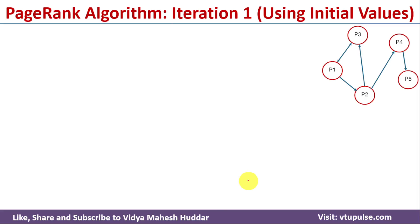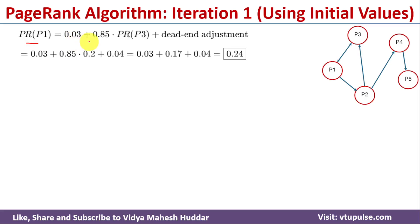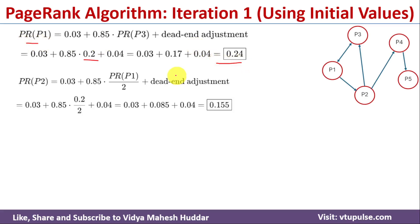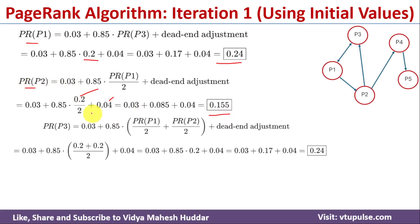Now we find the first iteration values by substituting the initial values (0.2 for all pages) into the equations. PageRank(P1) = 0.03 + 0.85 × 0.2 + 0.04 = 0.24. PageRank(P2) = 0.03 + 0.85 × (0.2/2) + 0.04 = 0.155. PageRank(P3) = 0.03 + 0.85 × (0.2/2 + 0.2/2) + 0.04; substituting P1 = 0.2 and P2 = 0.2, we compute P3.